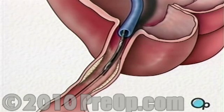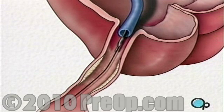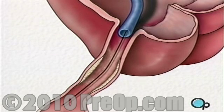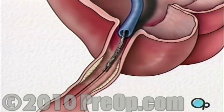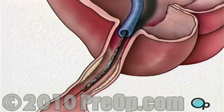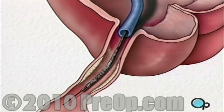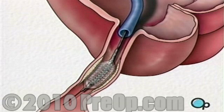The balloon catheter is then withdrawn and another balloon catheter is inserted. This balloon has the mesh stent tube wrapped around it. Once this tube has been placed in the center of the now-widened area of the artery, the balloon is briefly inflated. The stent expands until it hugs the walls of the artery.